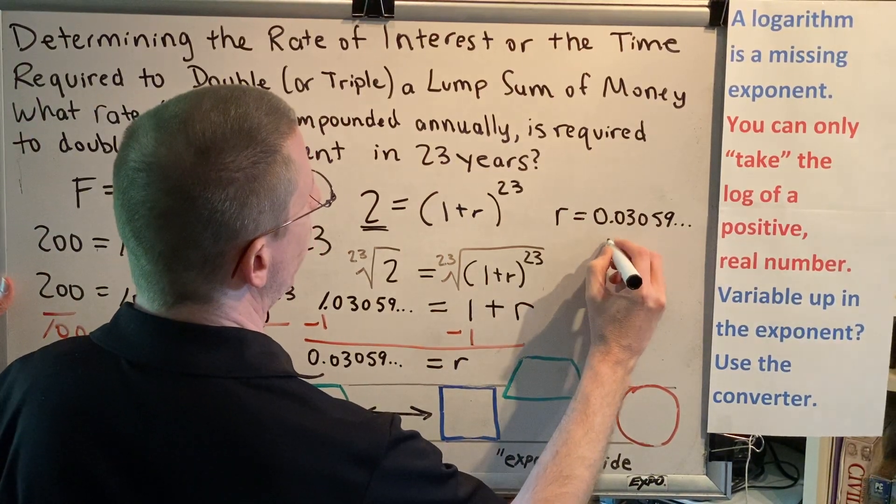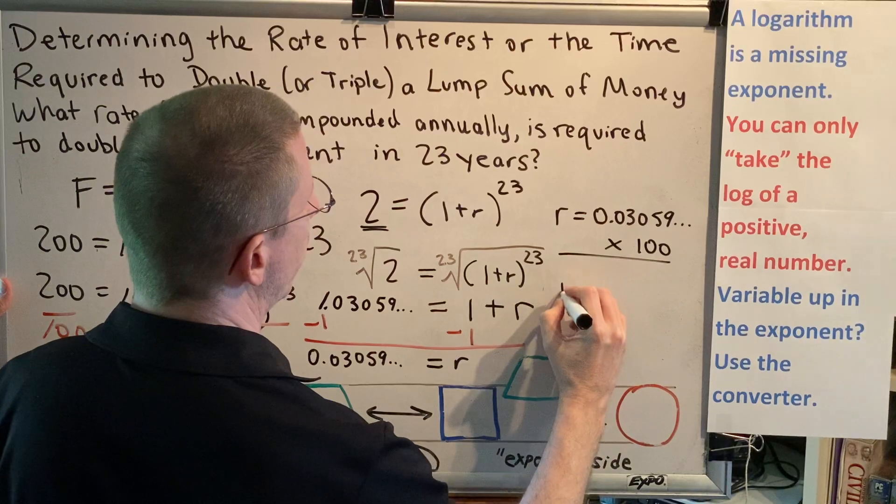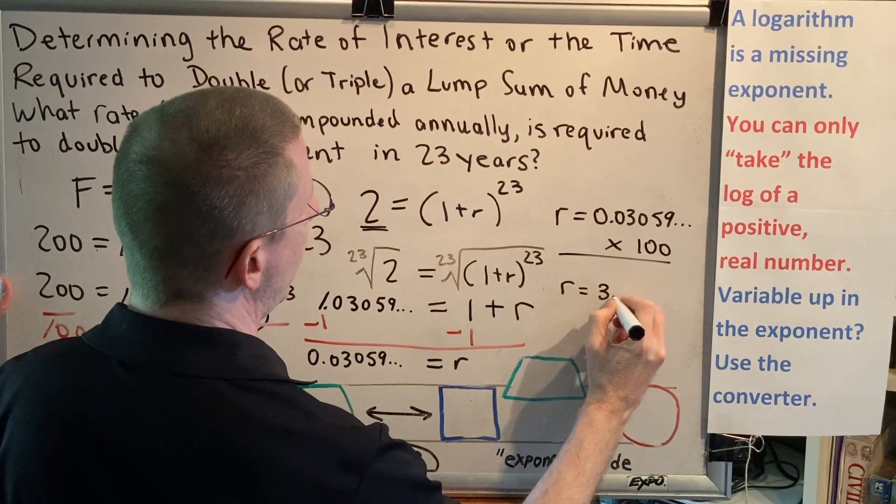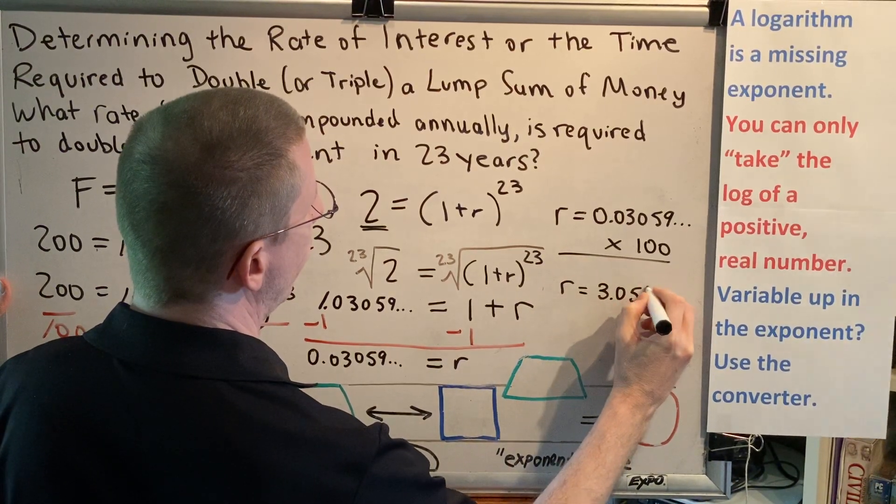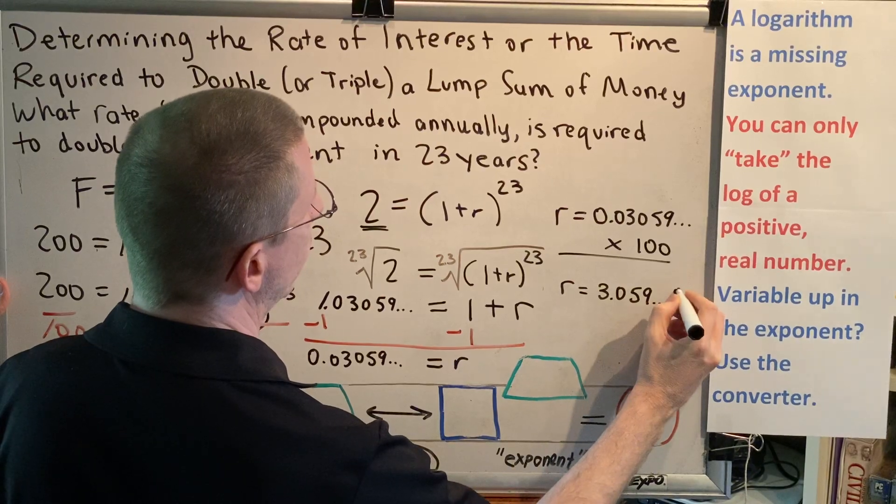So when we multiply this by 100, this tells me that R is equal to 3.059 dot dot dot percent.